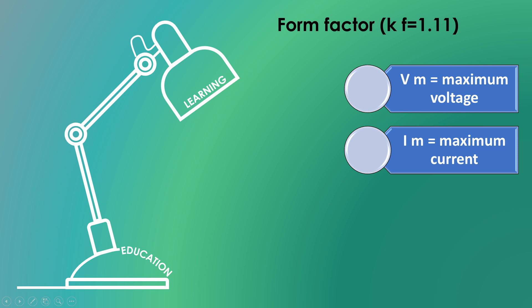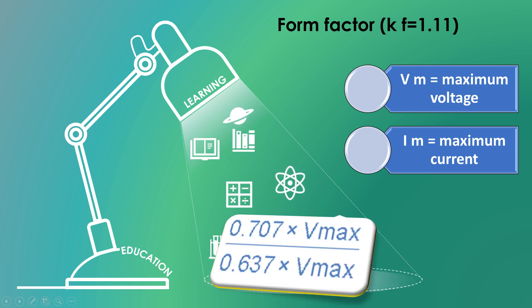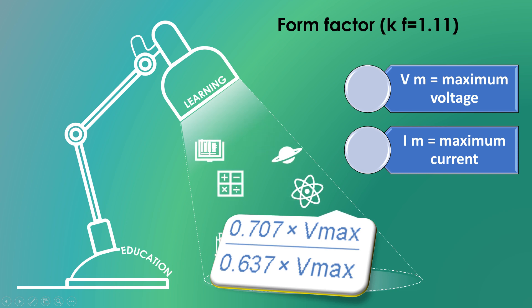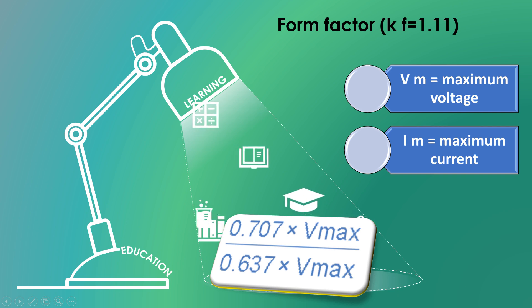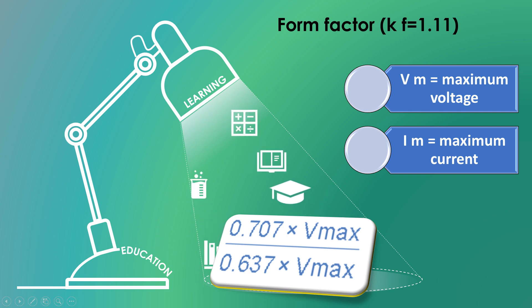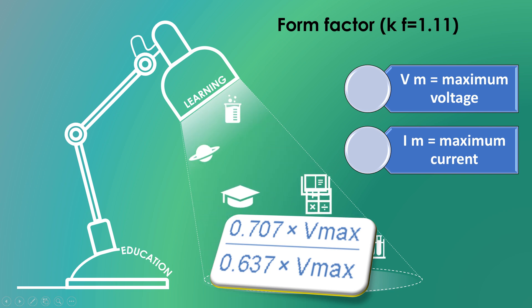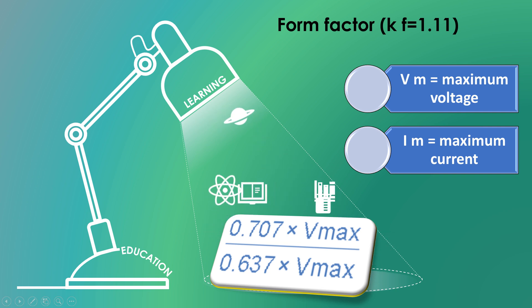To find the form factor: the form factor formula is 0.707 into Vmax divided by 0.637 into Vmax, where Vmax means maximum voltage. The form factor is 1.11.